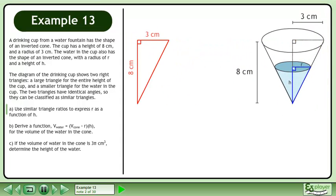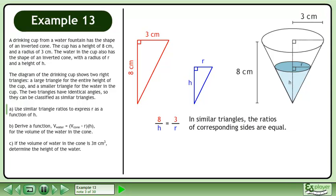We have two triangles embedded in the cone. Let's draw them separately so we can see things with more clarity. In similar triangles, the ratios of corresponding sides are equal.